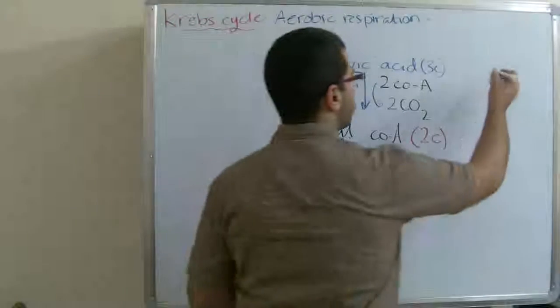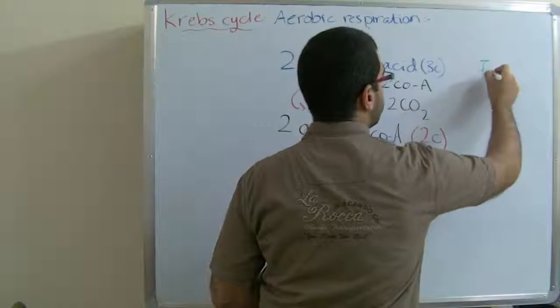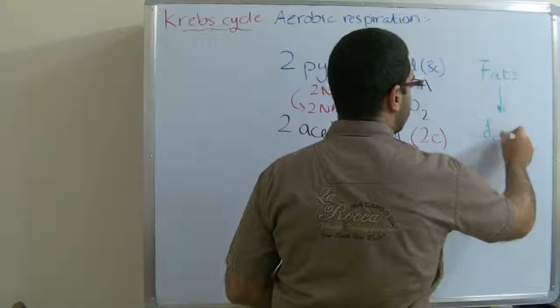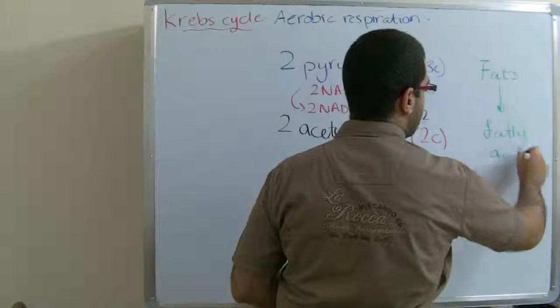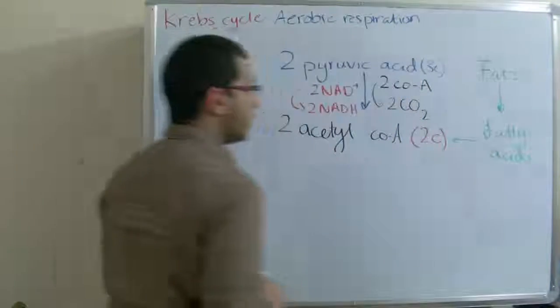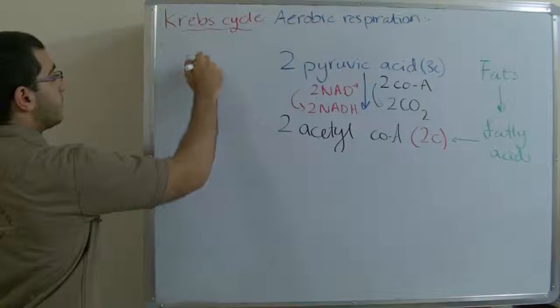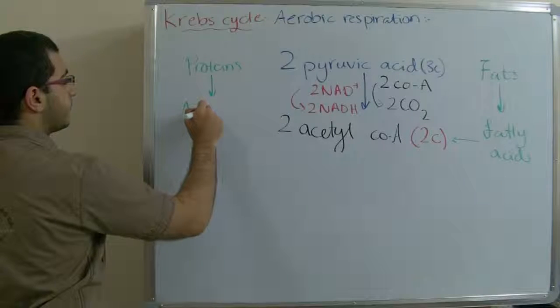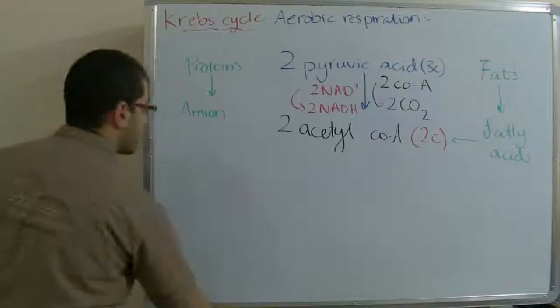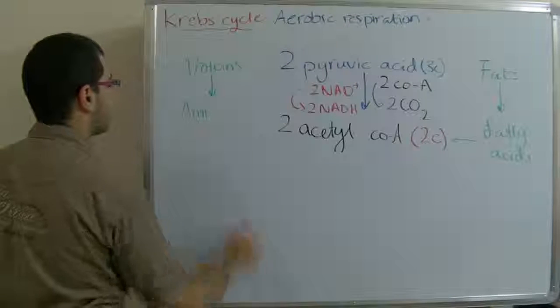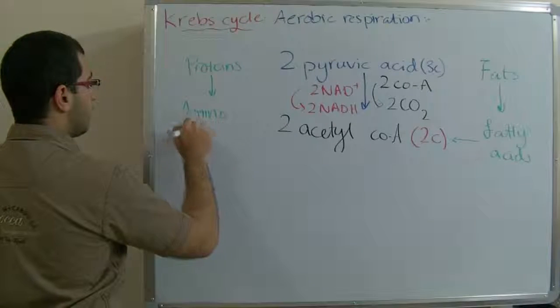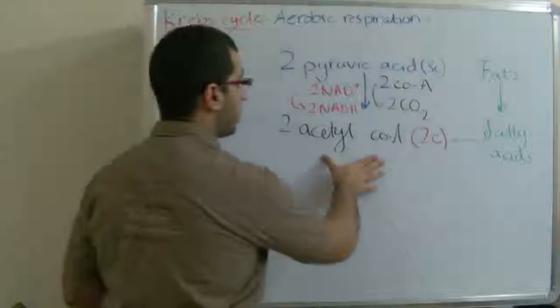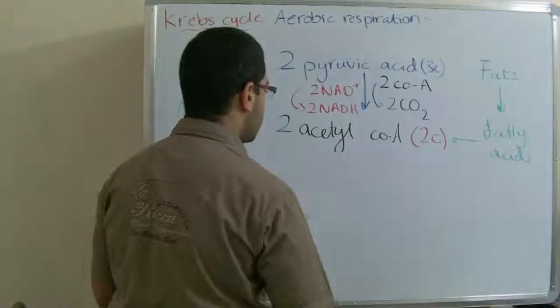The Acetyl groups which are produced from the disintegration of the fatty acids, proteins, and the amino acids can also join the two Acetyl CoA molecules in the Krebs cycle.